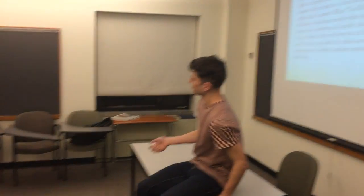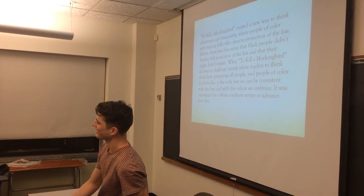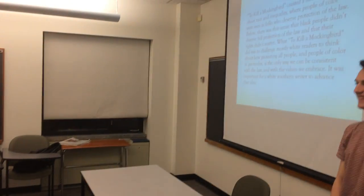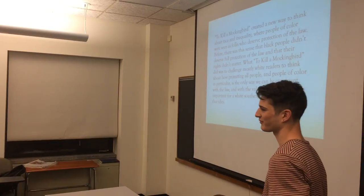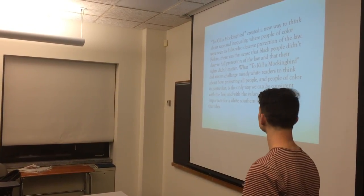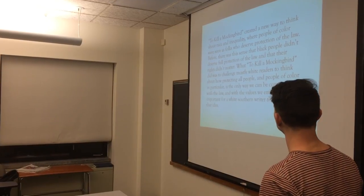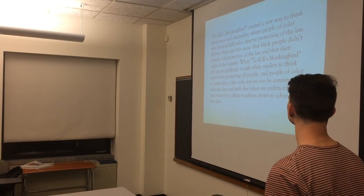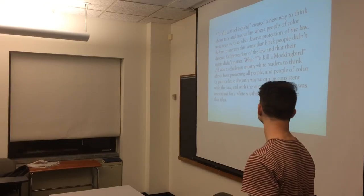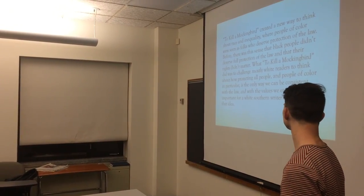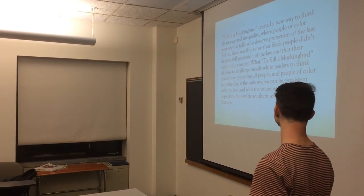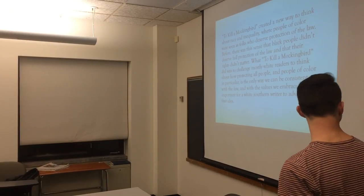So even though it's right there on the board, we'll start by reading it out loud. To Kill a Mockingbird created a new way to think about race and inequality, where people of color were seen as folks who deserved protection of the law. Before, there was this sense that black people didn't deserve full protection of the law and that their rights didn't matter. What To Kill a Mockingbird did was to challenge mostly white readers to think about how protecting all people, and people of color in particular, is the only way we can be consistent with the law and with the values we embrace. It was important for a white southern writer to advance that idea.